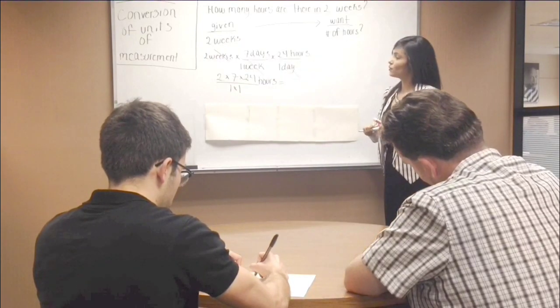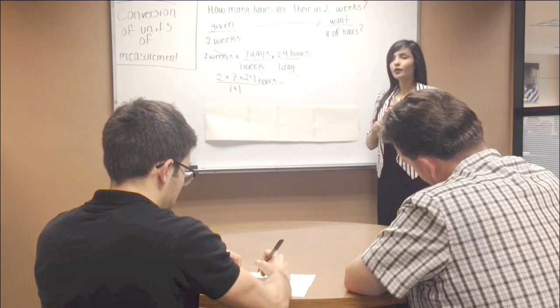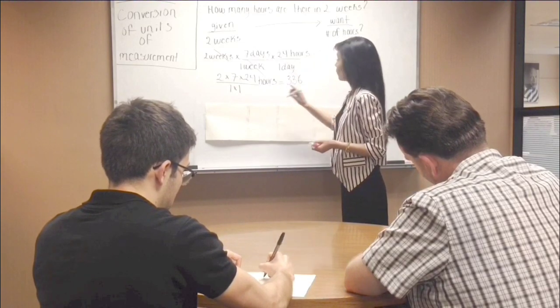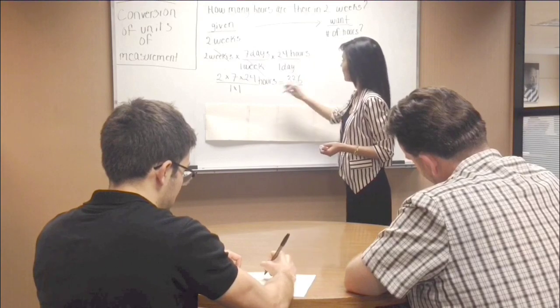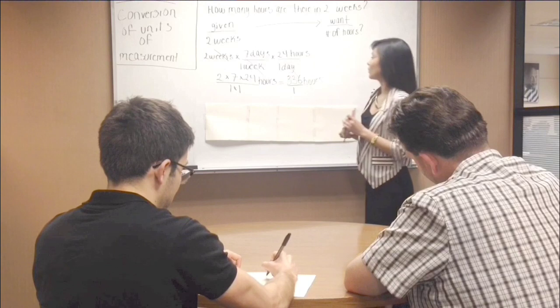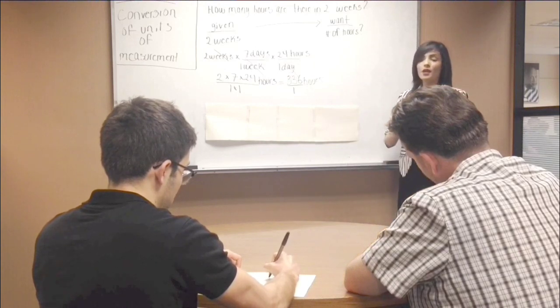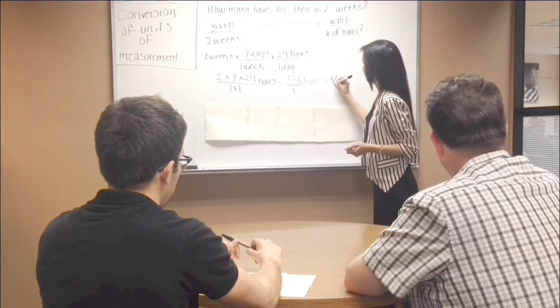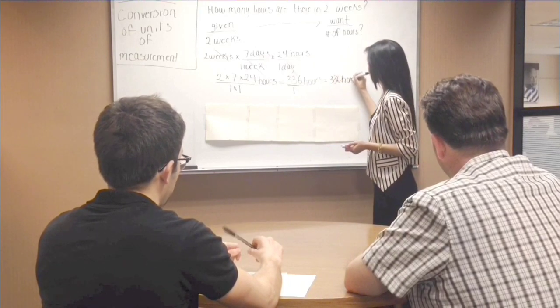So here we have 2 times 7 times 24, which is 336, 1 times 1, that's 1, and we carry three units of hours over. So we have 336 over 1 hours. But anything divided by 1 is just itself. So our final answer is then 336 hours.